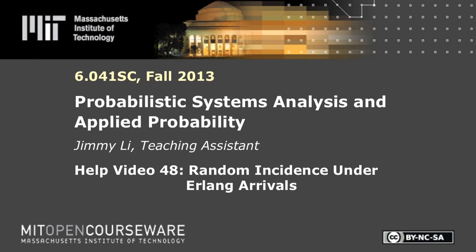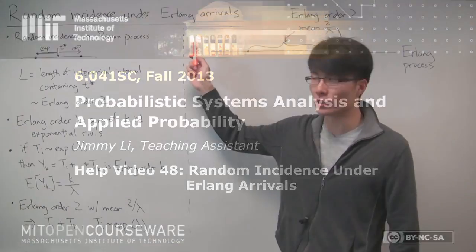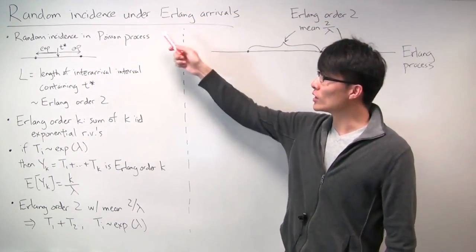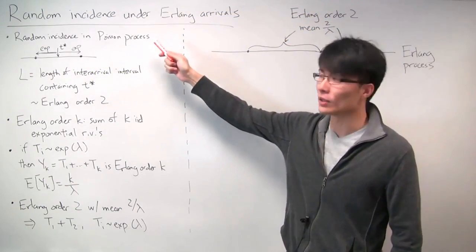In this problem, we're going to look at random incidence under Erlang arrivals. First, let's parse what that means.